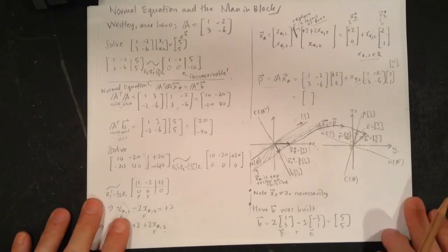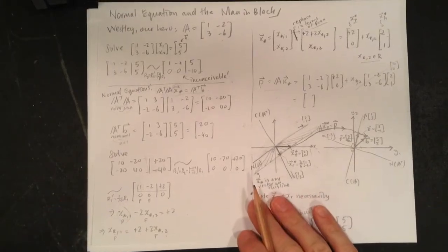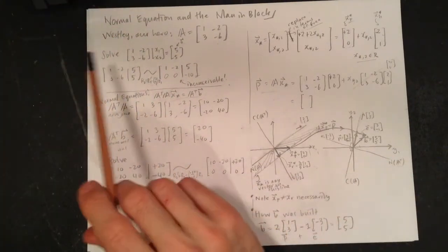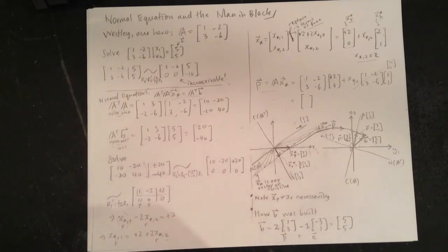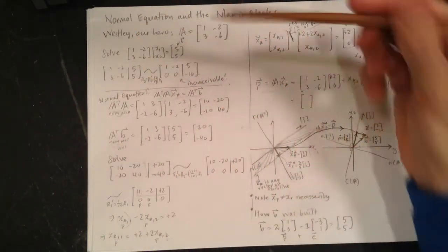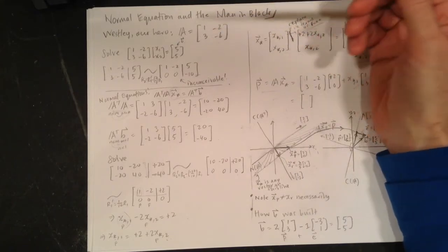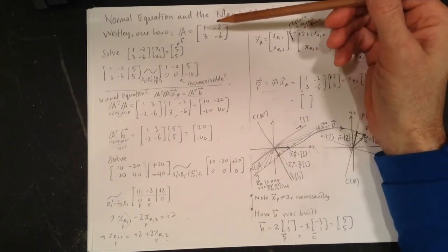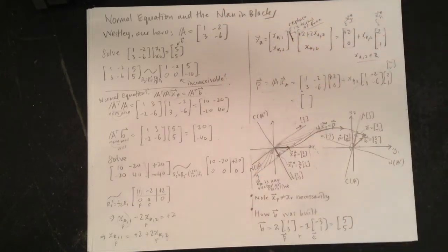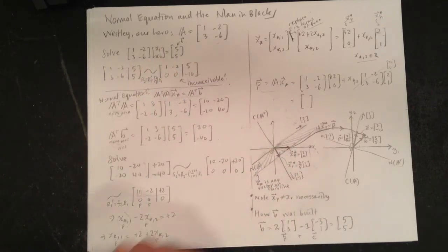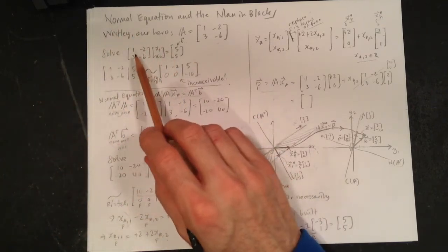We are working on the normal equation for the Man in Black, who we know as Wesley or the Dread Pirate Roberts. Matrix A has columns [1, 3] and [-2, -6]. The second column is a multiple of the first column, second row is a multiple of the first row—it's a rank one matrix. We've studied its big picture, gone through all sorts of things, but let's look at it from the normal equation point of view when we can't solve this kind of problem when it isn't full rank.